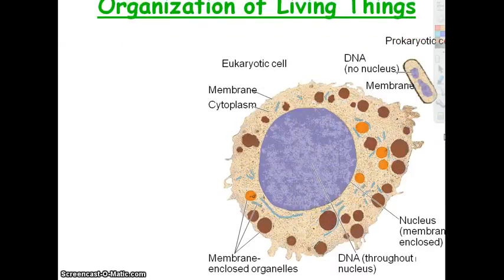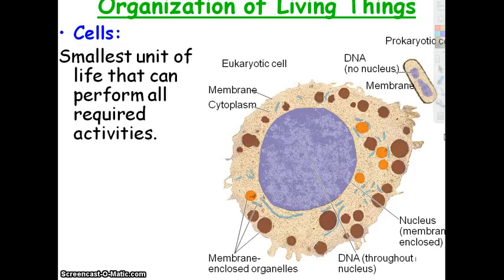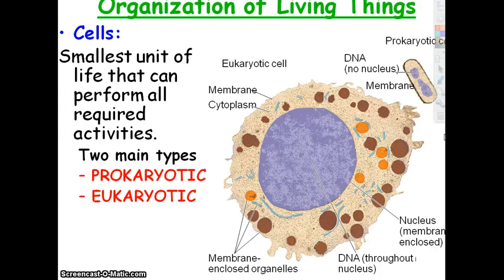Another characteristic is that all living things are made out of cells. Some living things consist of just a single cell. That's why we say the smallest unit of life that can perform required activities is the cell — because there are some organisms that consist of only one cell.